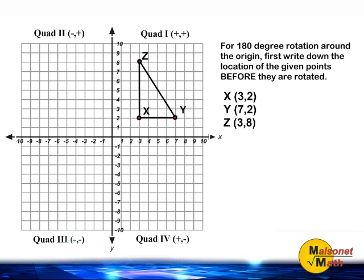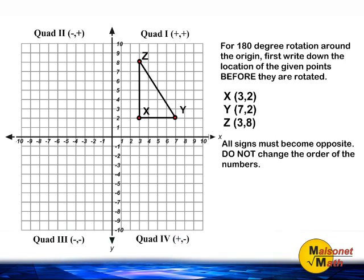To rotate any object 180 degrees around the origin, simply change all of the signs inside your parentheses. Because all of our signs are positive, you must change all of them to be negative. So point X will become (-3,-2), Y will become (-7,-2), and Z will become (-3,-8).